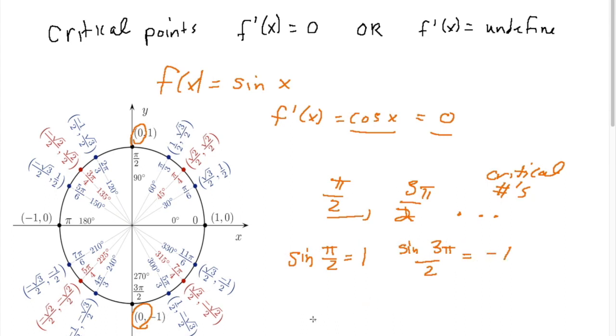So our critical points are at pi over 2, comma 1, and 3 pi over 2, comma negative 1.